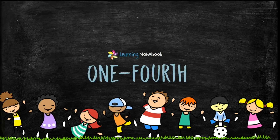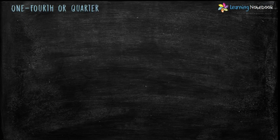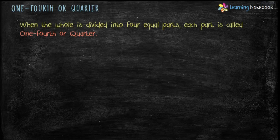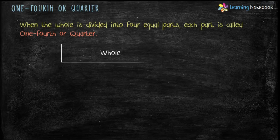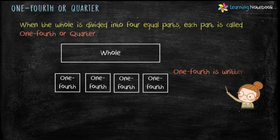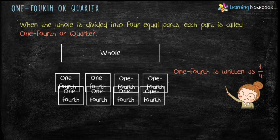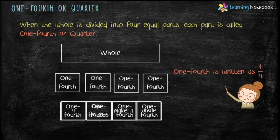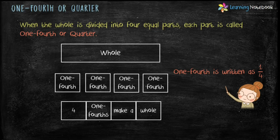Now let's see what is 1 fourth. When the whole is divided into four equal parts, each part is called 1 fourth or quarter. 1 fourth or quarter is written as 1 by 4. And students, four 1 fourths make a whole.